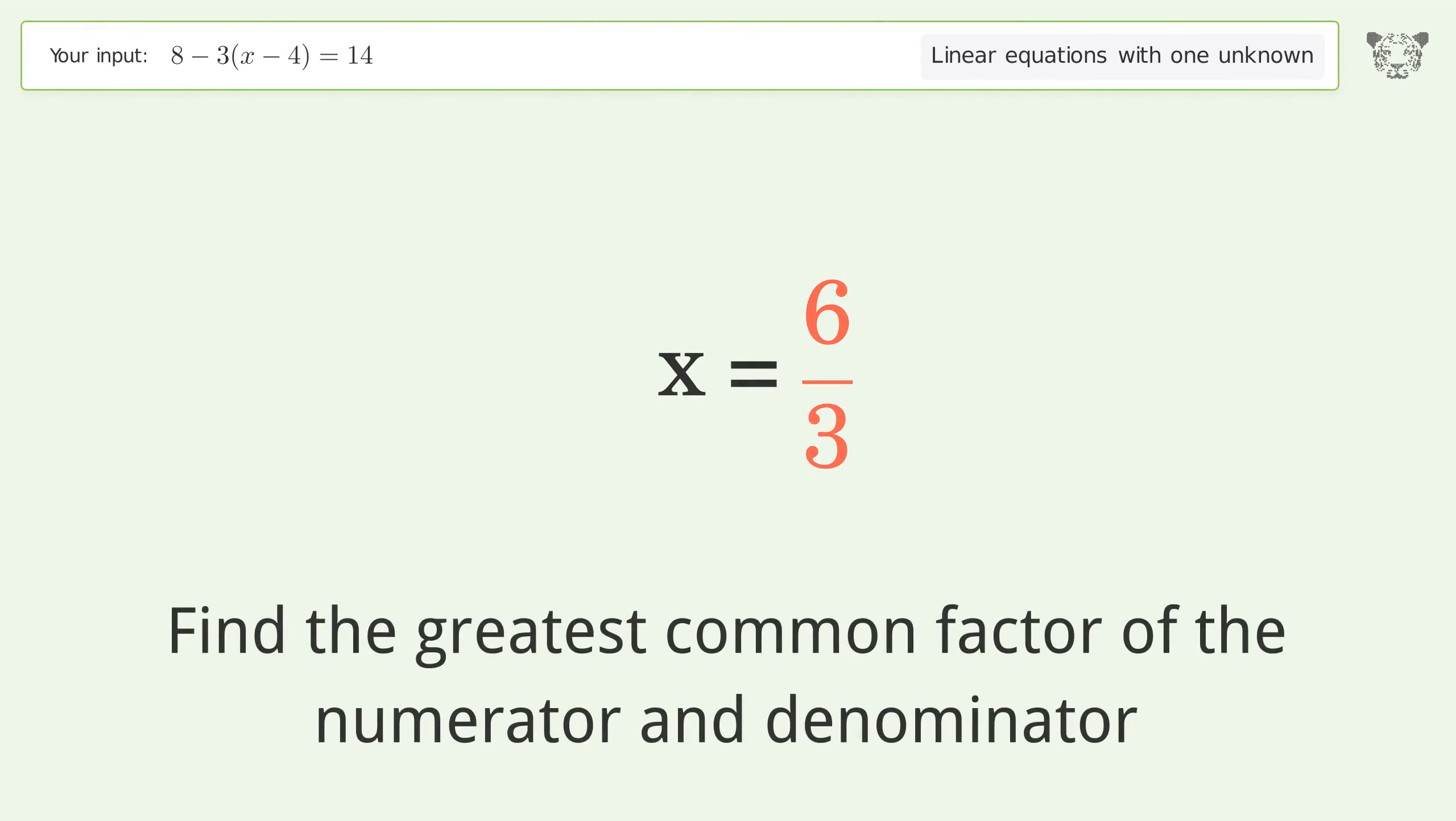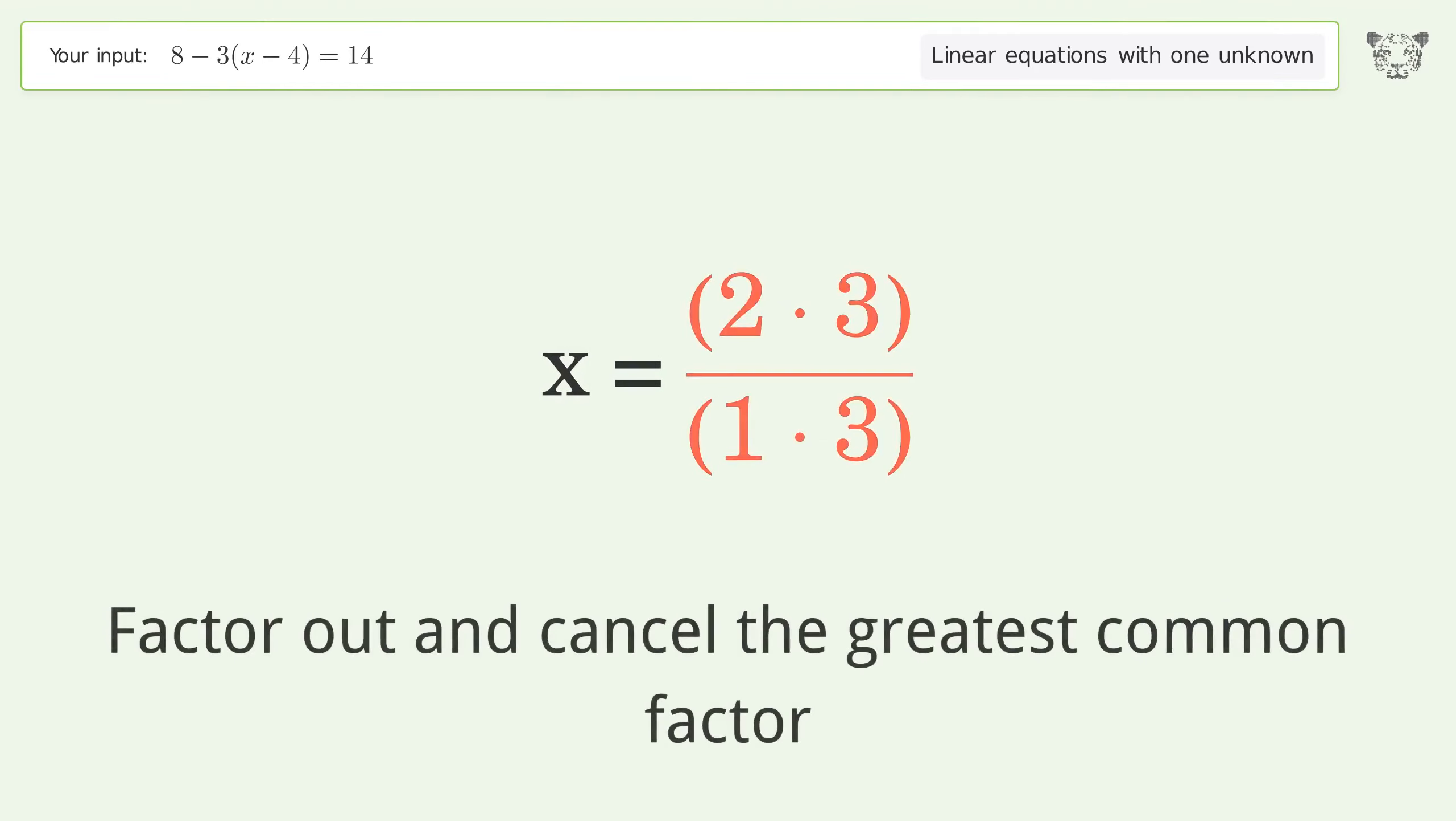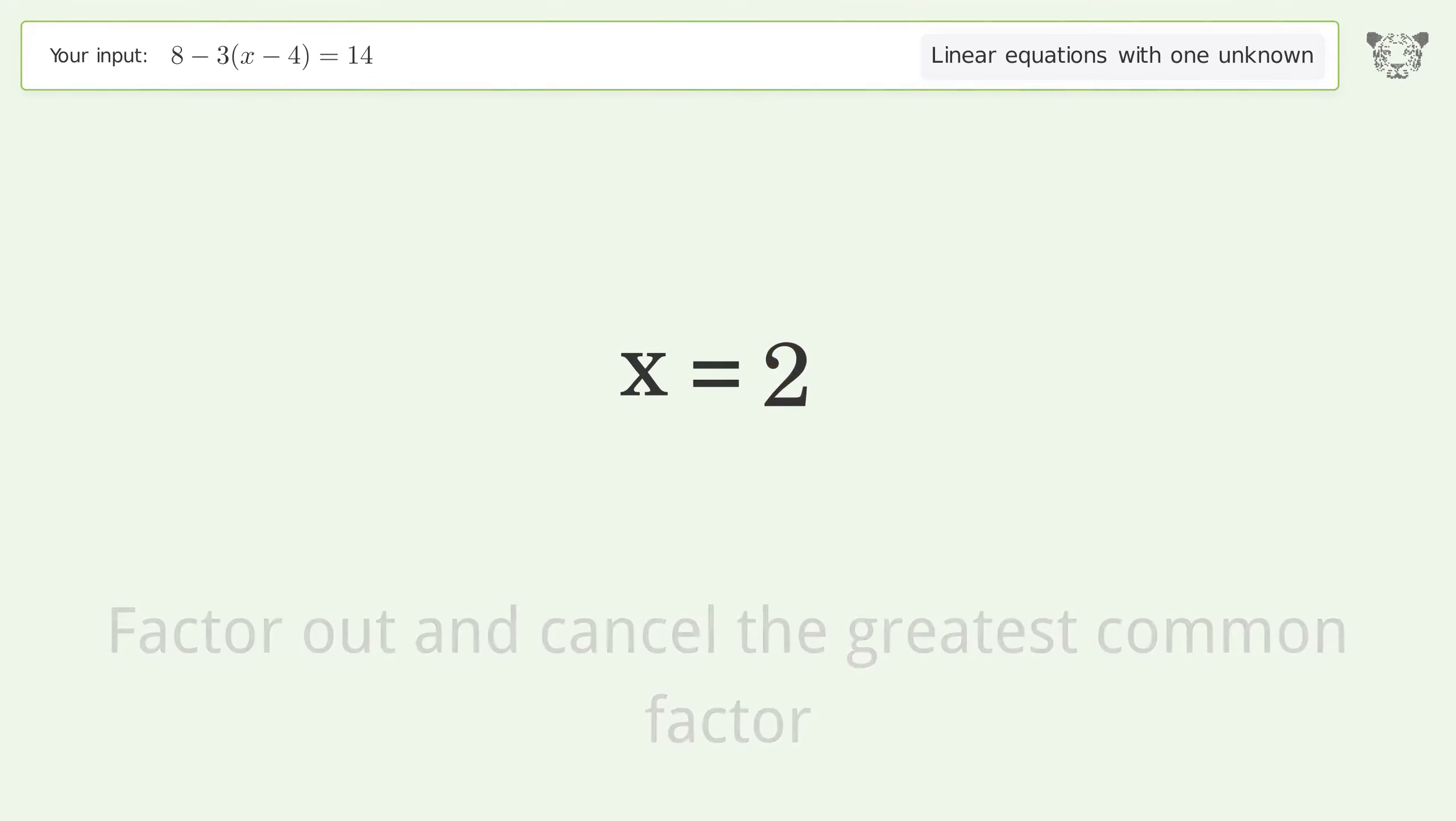Find the greatest common factor of the numerator and denominator. Factor out and cancel the greatest common factor. And so the final result is x equals 2.